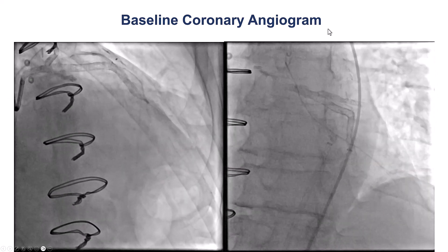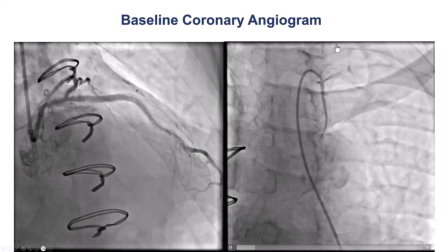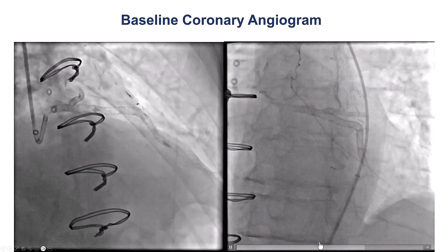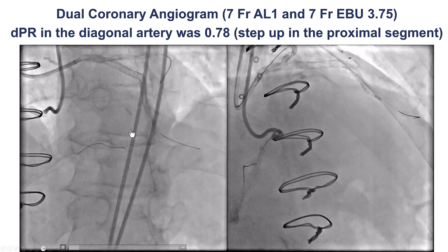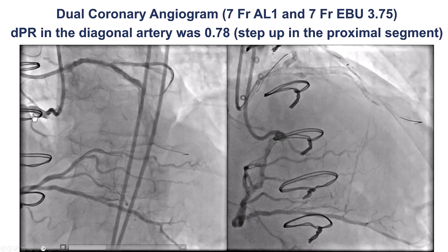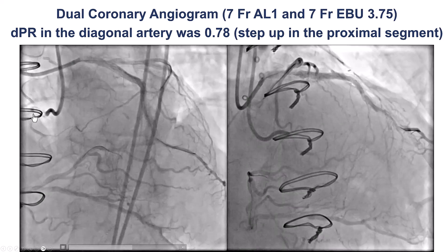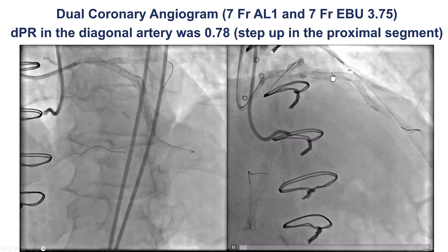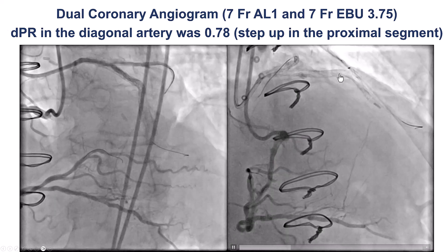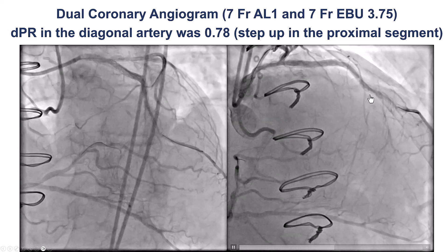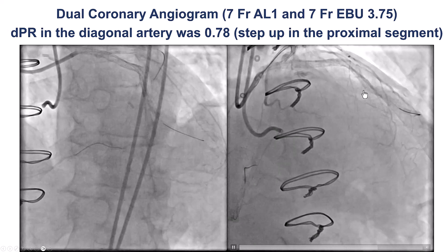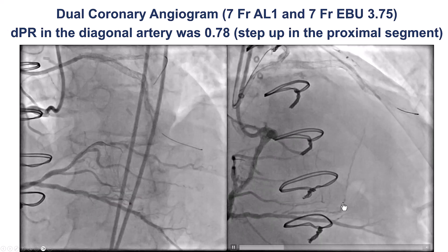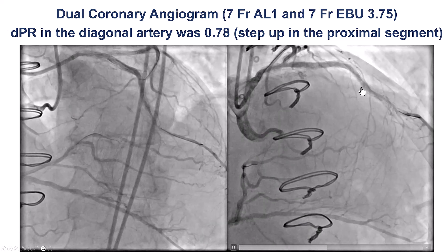This is an injection of the LIMA graft that was actually occluded distally. We performed the dual injection and we see the same pattern. We have an occlusion of the mid-LAD with ambiguous proximal cap because we have the previously placed stents that go all the way into the diagonal branch. And we do have septal collaterals that fill the mid-LAD.